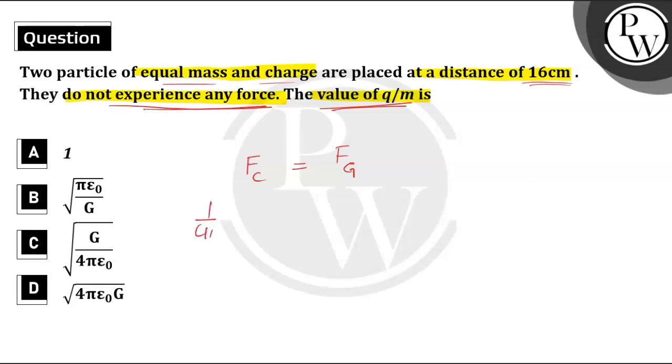Coulomb force is 1 by 4 pi epsilon naught. Let us take the charge as Q. Q1 into Q2 gives us Q square by the distance square, which must be equal to the gravitational force.